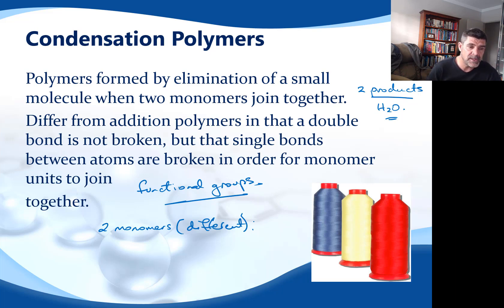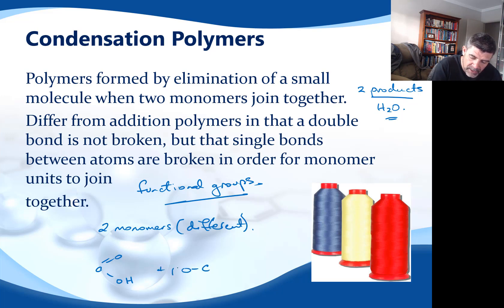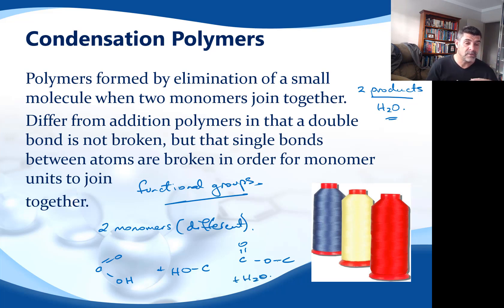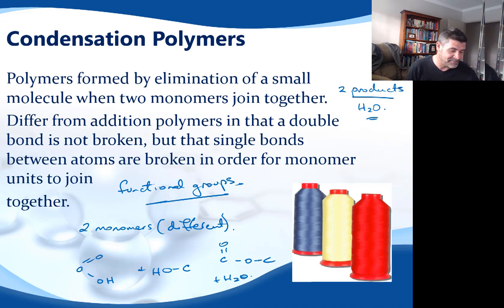We need to look at some functional groups. We know that if we have a carboxylic acid — a COOH group — and we add it to an alcohol group, then what we form is our ester bond, and in the process water is released. So obviously if we were to add lots of these together we'd have a polyester and we'd have lots of water molecules. But that's for the next video.